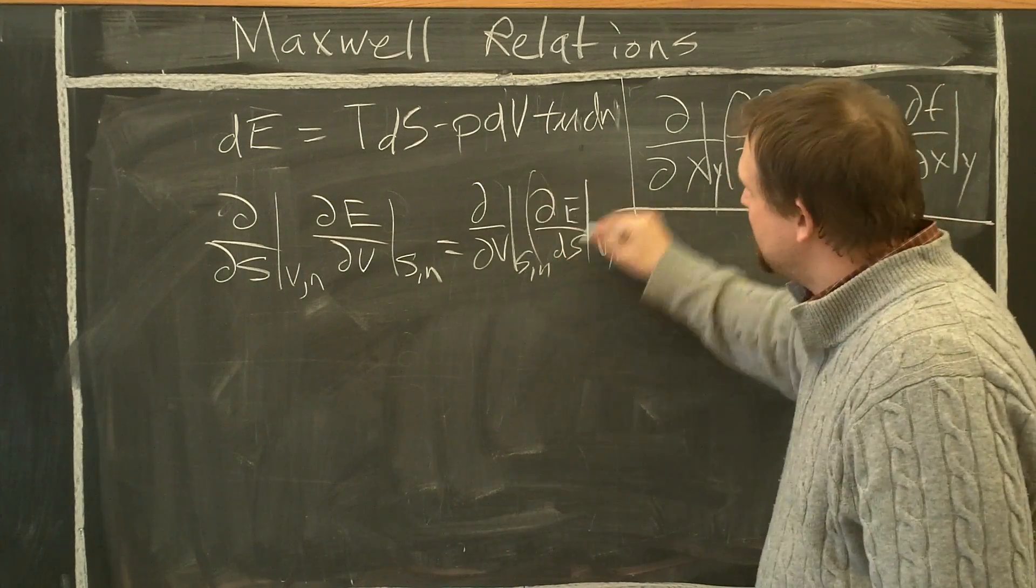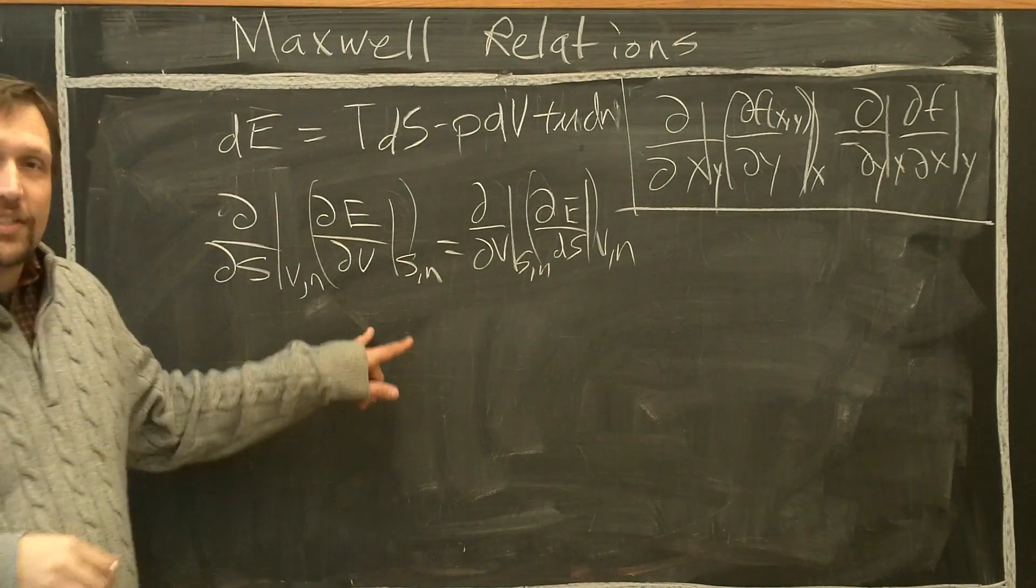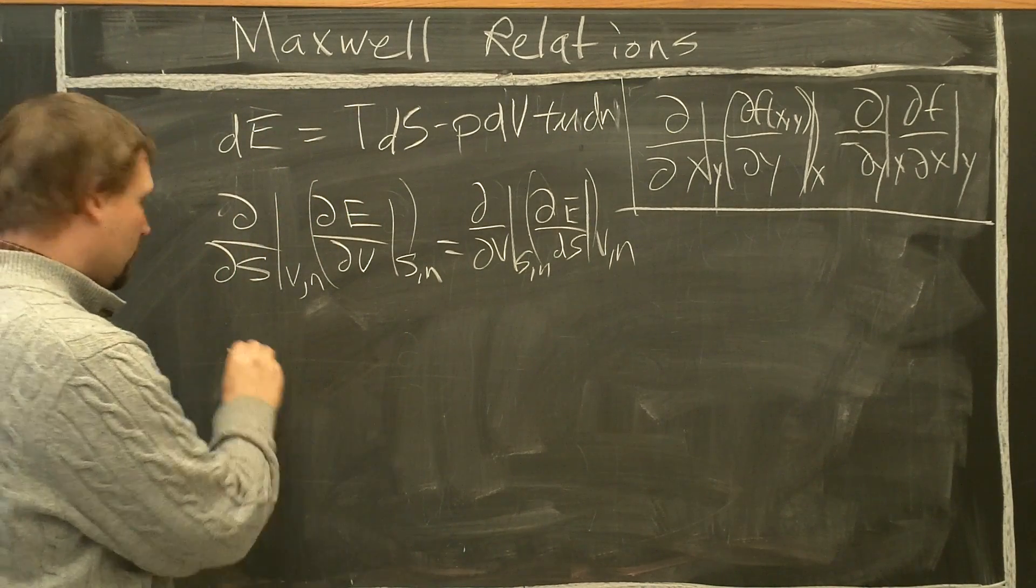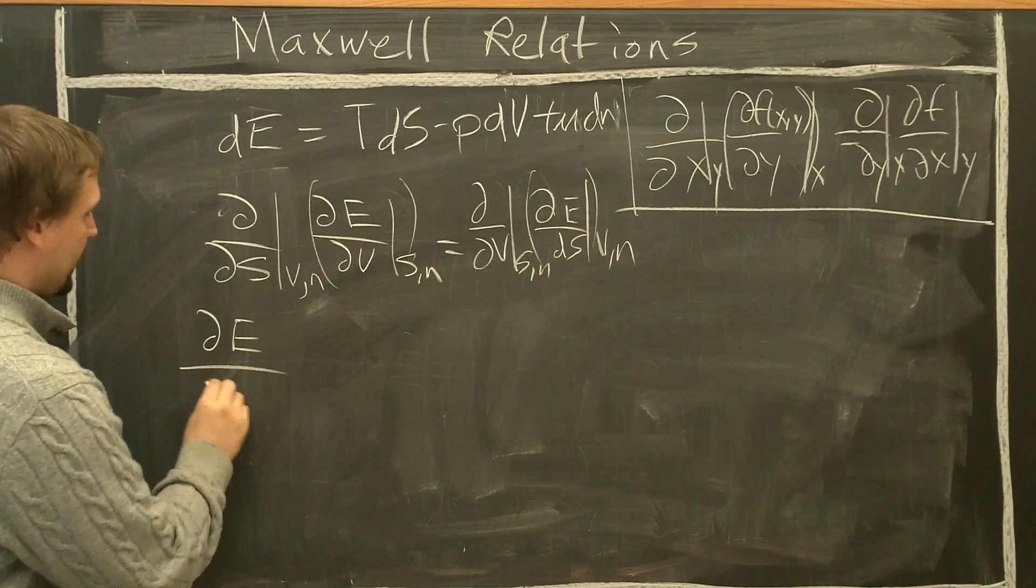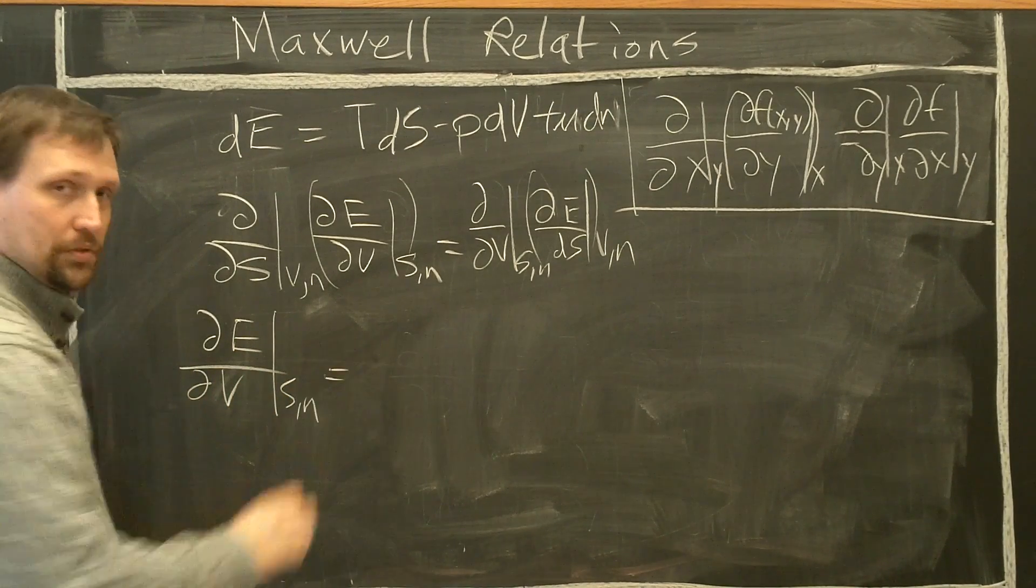So in order to evaluate this, we first must take the derivative of what's inside of the parentheses here. Let's do this real quick. We have ∂E/∂V, S comma N fixed equals what?